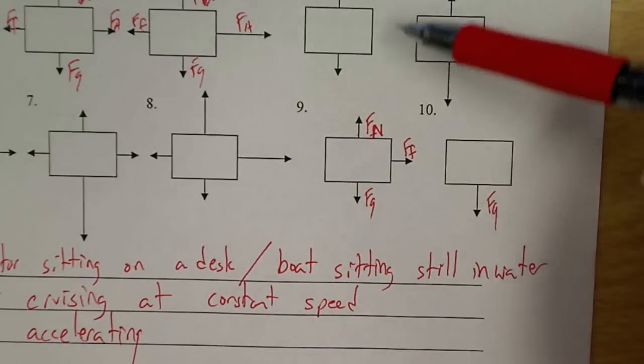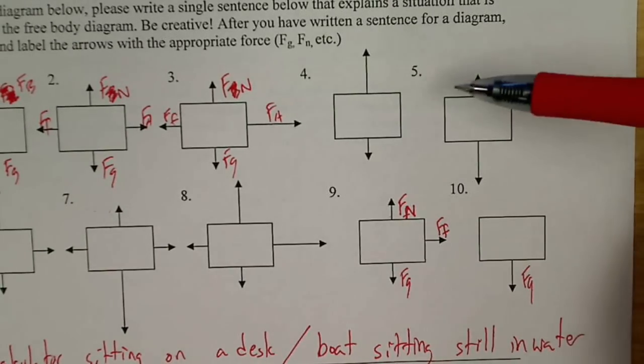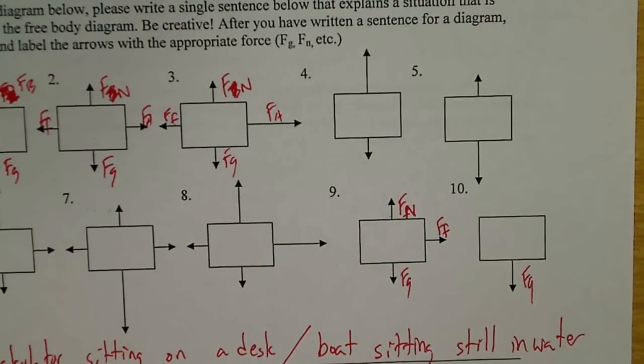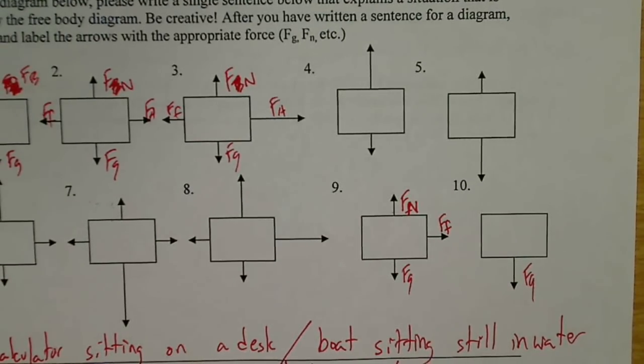But this is the basic idea. The idea that there's different directions, that the horizontal and vertical are independent, that forces come from different sources, and that whenever the arrows are equal, those forces cancel out, so no acceleration. If one force is larger, then we'll have an acceleration. Forces cause accelerations, not velocities.